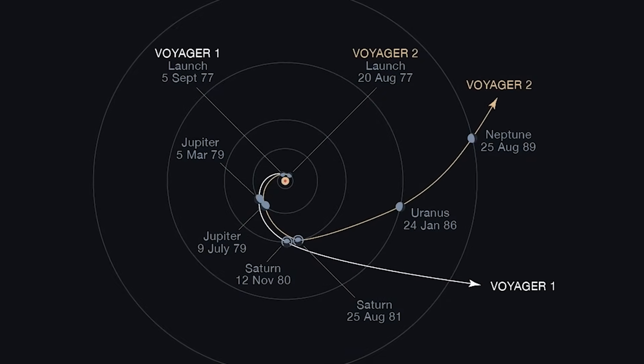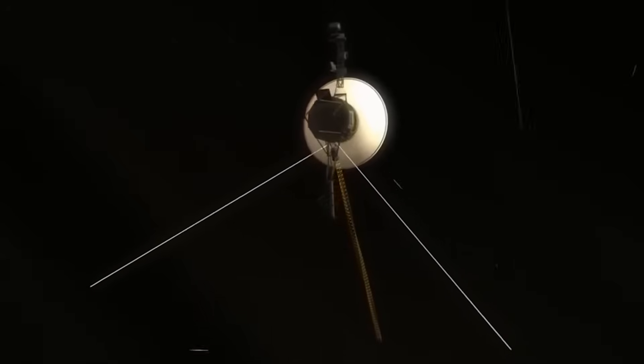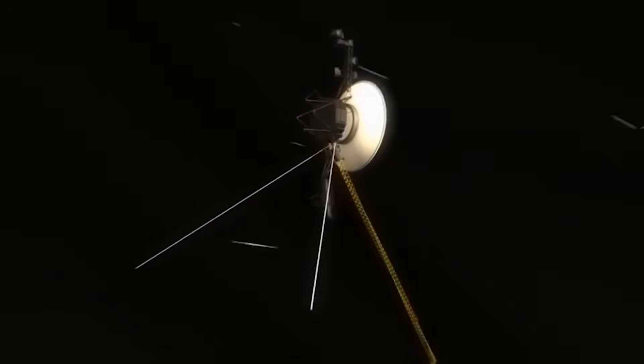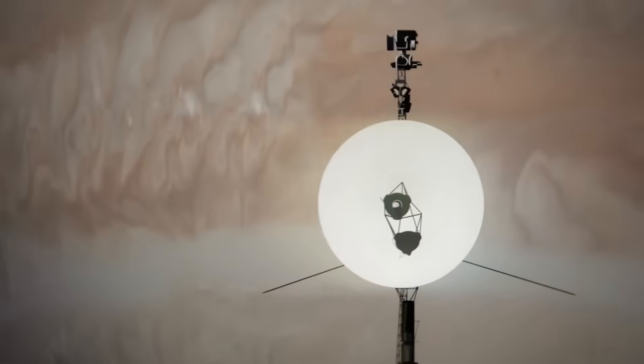Voyager 1, drifting through a realm where the influence of our sun is a whisper, had apparently entered a space where new physics might apply. The signal, though faint and barely distinguishable from background noise at first, grew clearer over the course of several hours.